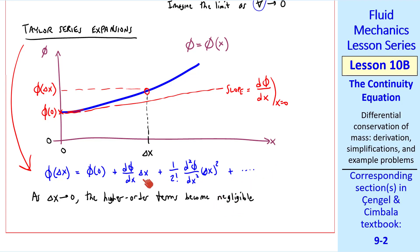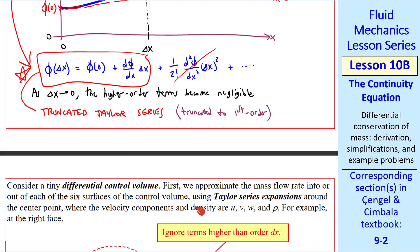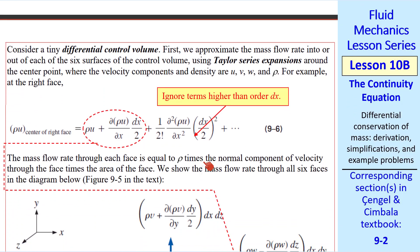For example, if delta x is 10 to the minus 6th, delta x squared is 10 to the minus 12th. So this part, ignoring these terms, is what we'll use, and we call that a truncated Taylor series, truncated to first order. This is what we'll use in our derivation.